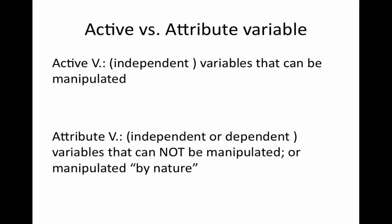The active variable is the independent variable and can be manipulated. The attribute variable can be independent or dependent. These variables cannot be manipulated or are manipulated by nature, for example, age.